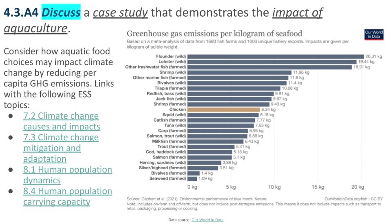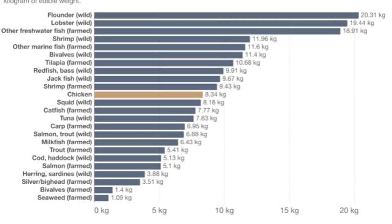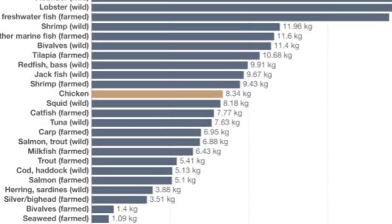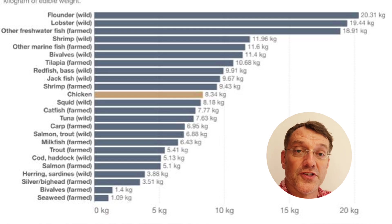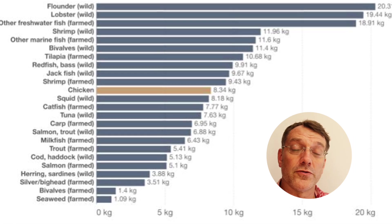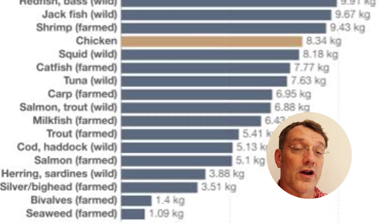Other named examples relevant for exams involve the species shown on a greenhouse gas comparison graph. Species at the top of the graph produce the most greenhouse gases per kilo of meat produced, so aquaculture of those species could contribute to increased climate change. Chicken — a terrestrial farming product included as a reference point — produces 8.3 kilos of greenhouse gases per kilo of meat. Aquaculture systems focused on species that produce fewer greenhouse gases than chicken may be considered beneficial for mitigating climate change by reducing the emissions associated with aquatic food production.